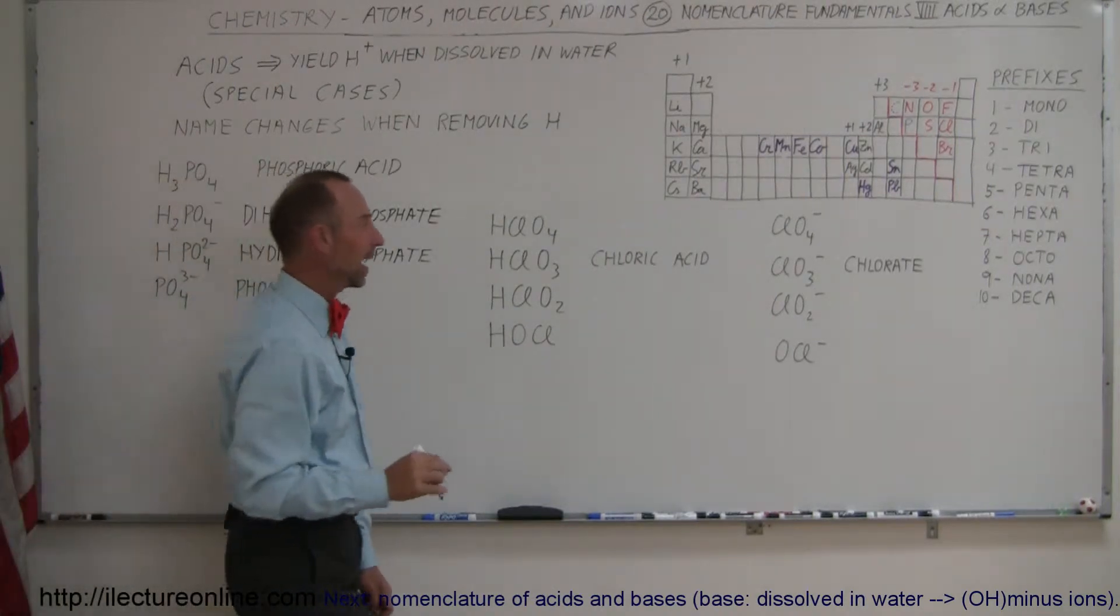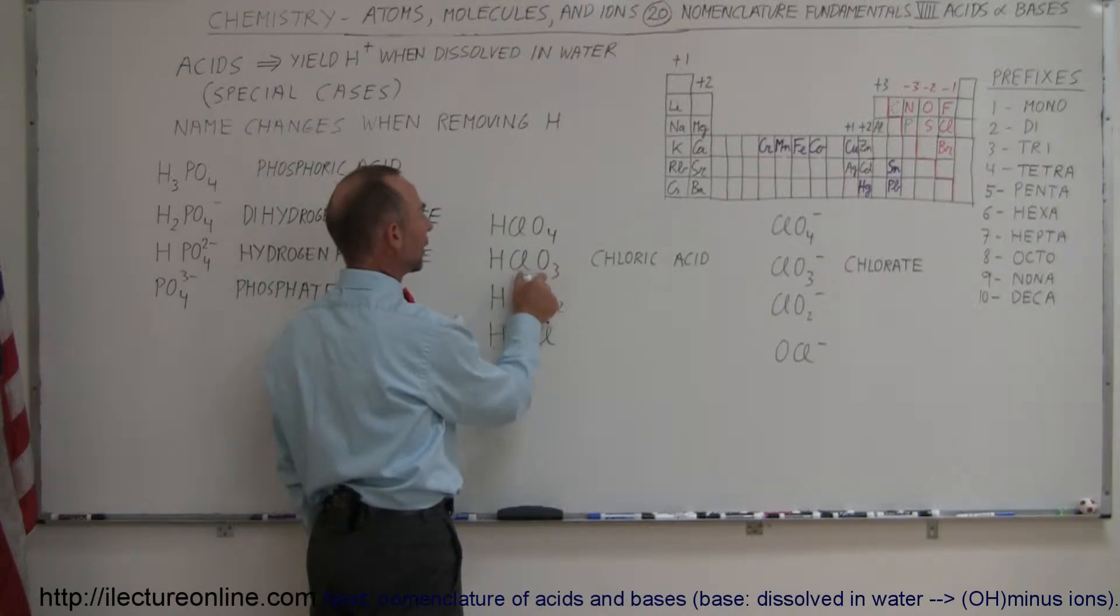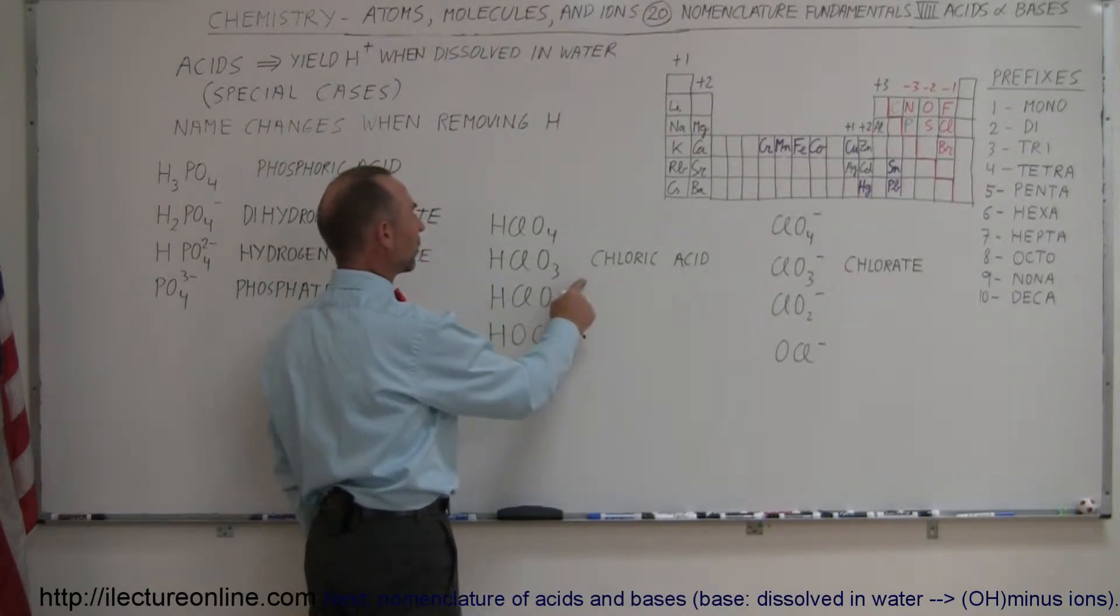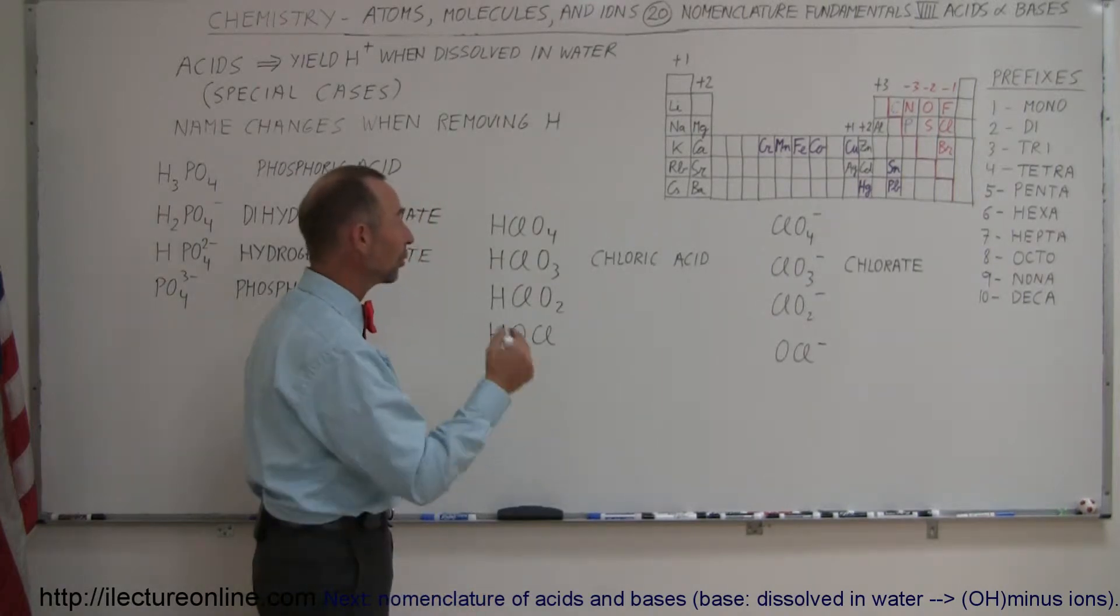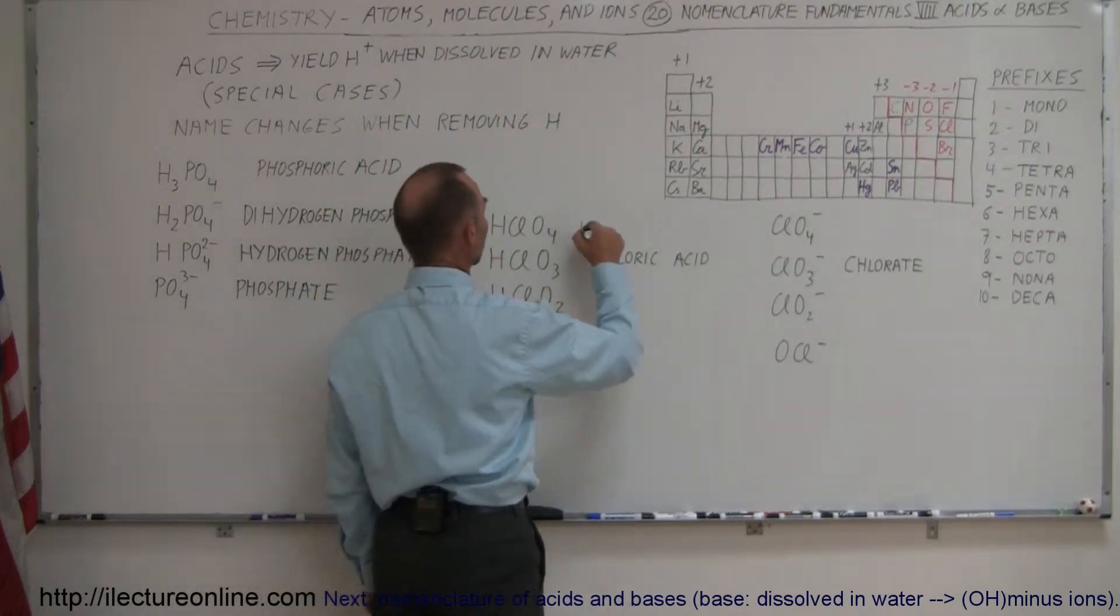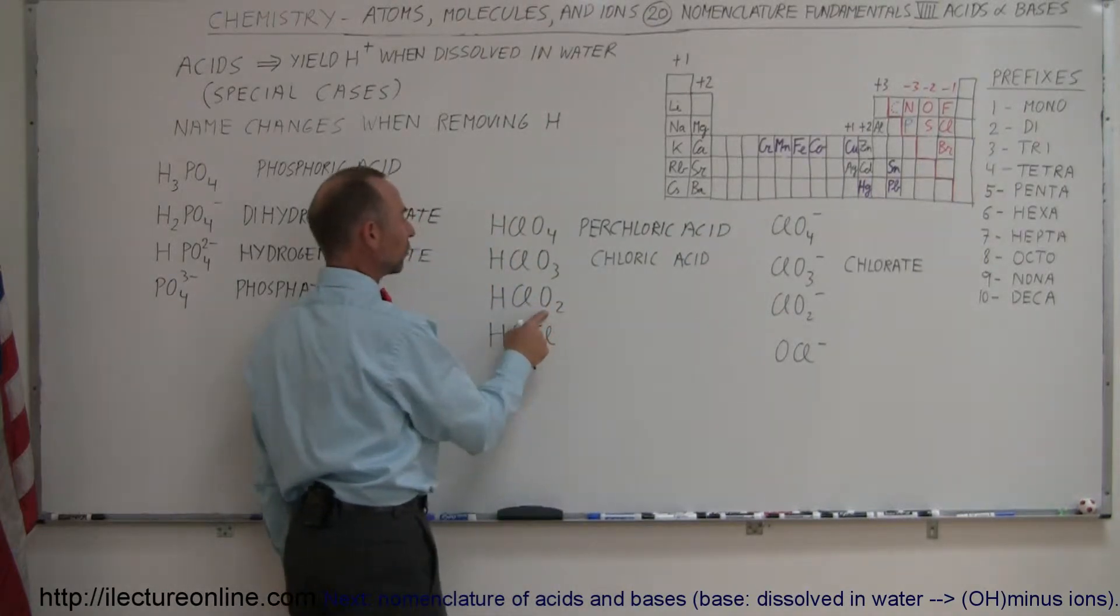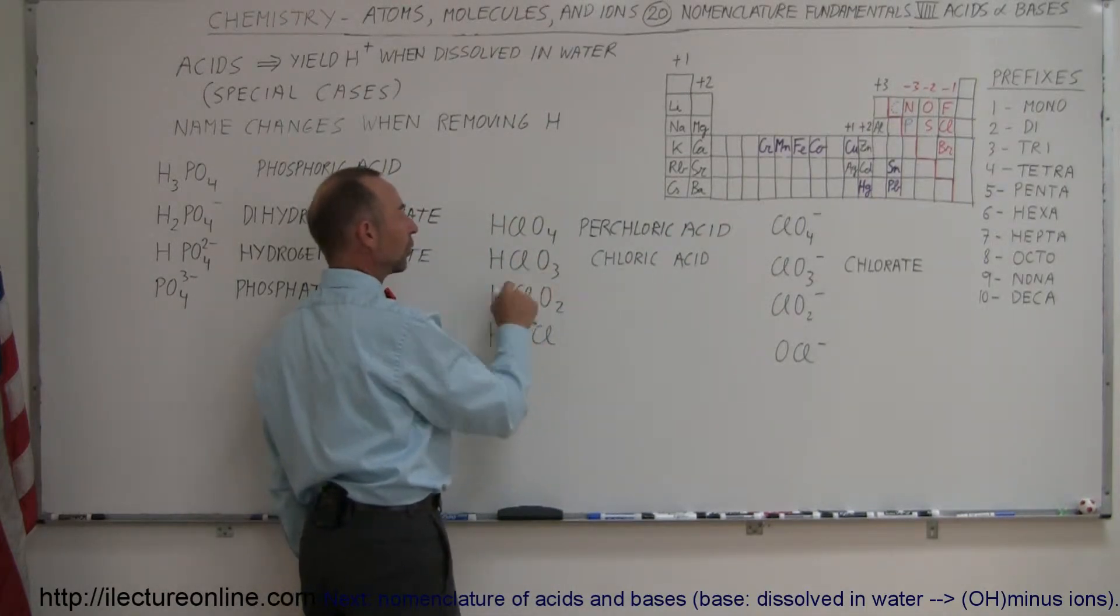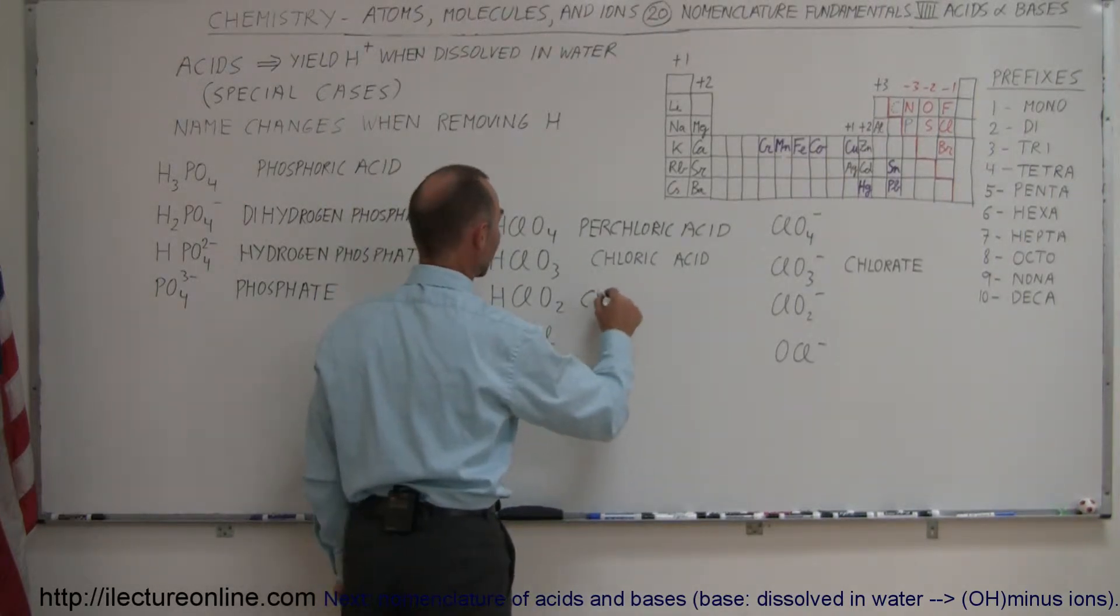Here we have another familiar acid. We call it chloric acid because this came from the chlorate ion. So what do we call it when we add another oxygen? Remember the rule was that we add the per in front of it. So this is perchloric acid. And here when we remove an oxygen from the normal HClO3, then we change the ick to an ous. So this becomes chlorous acid.